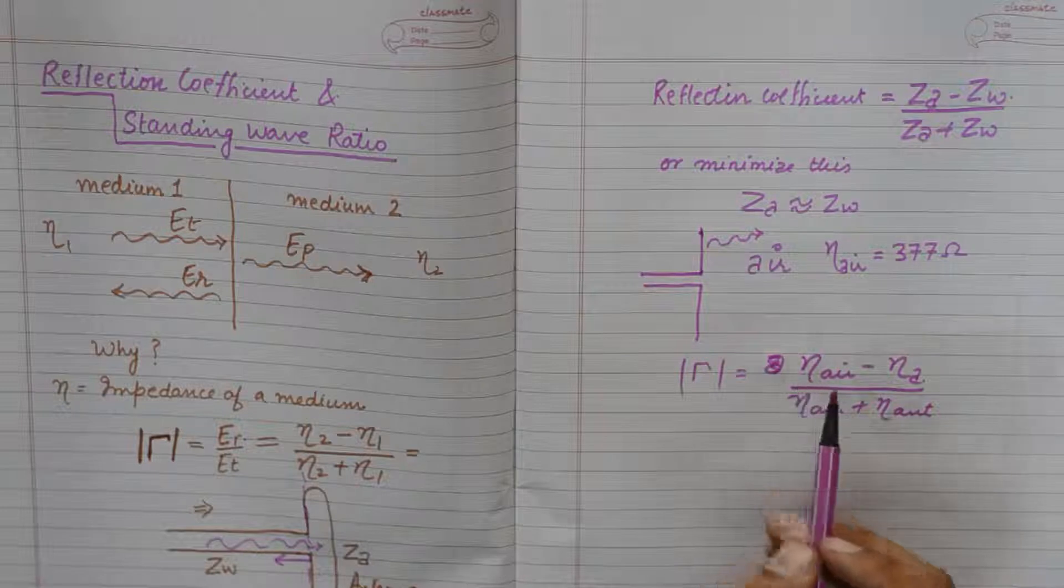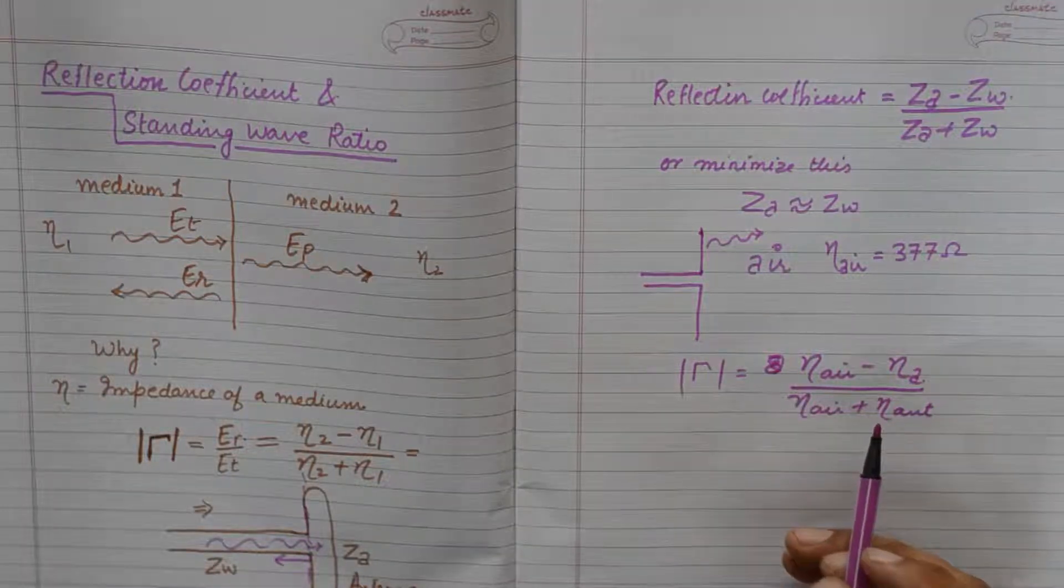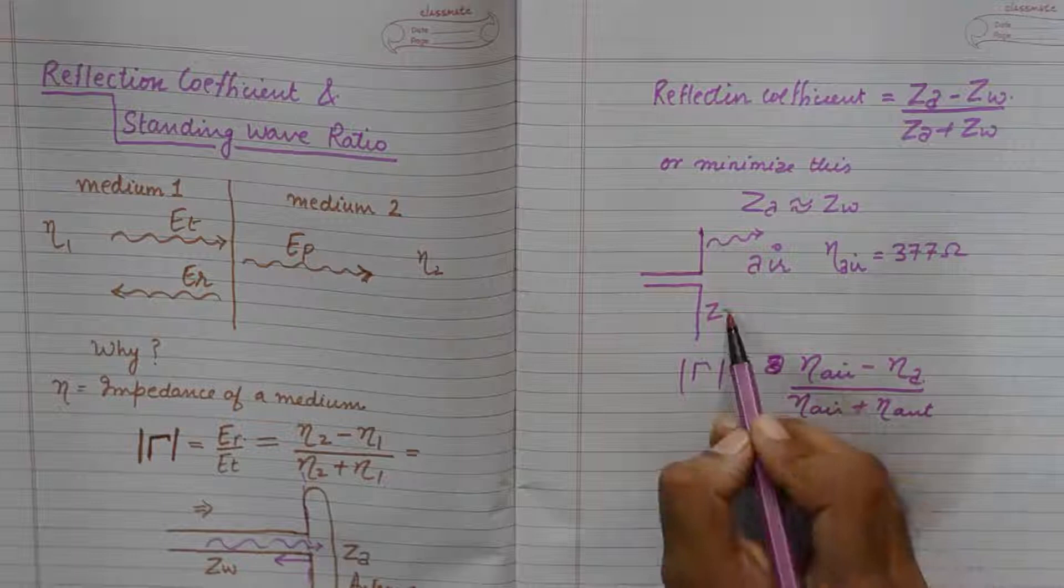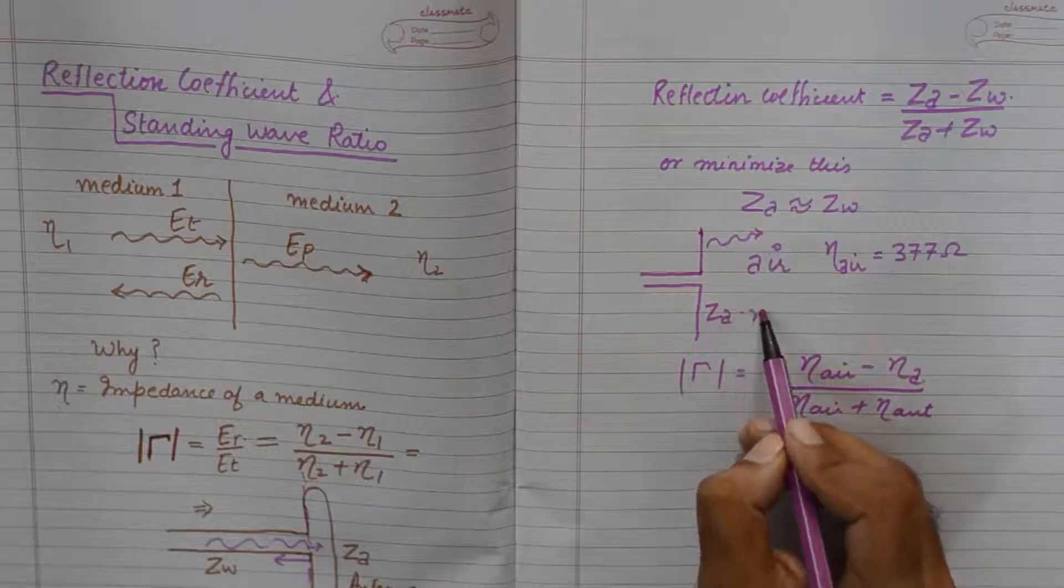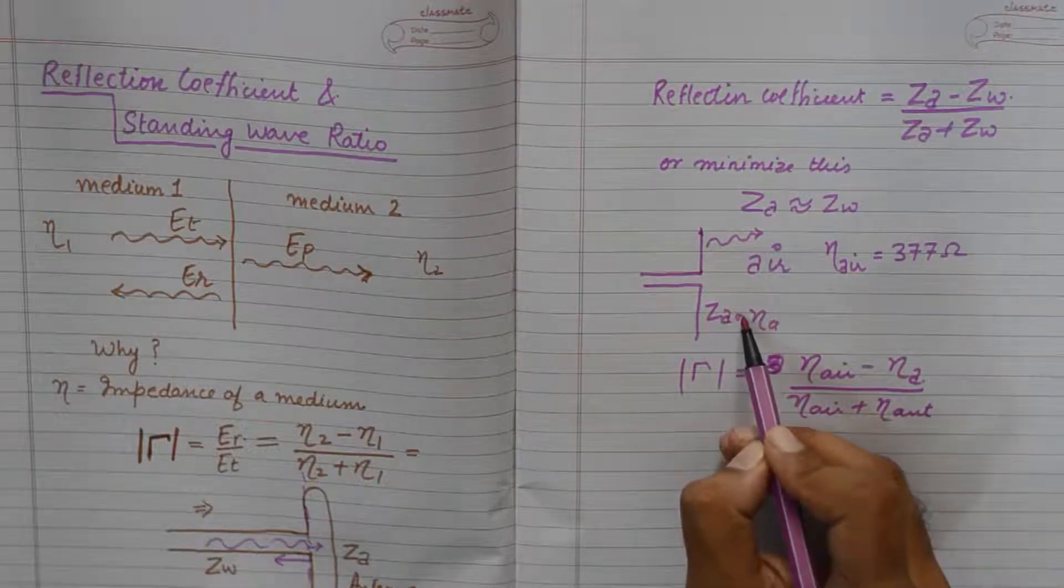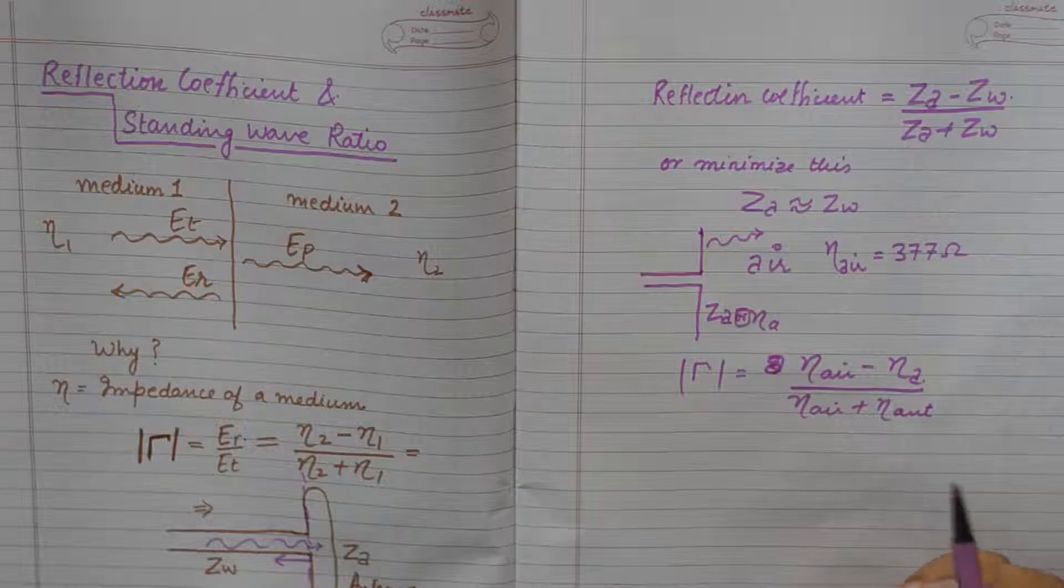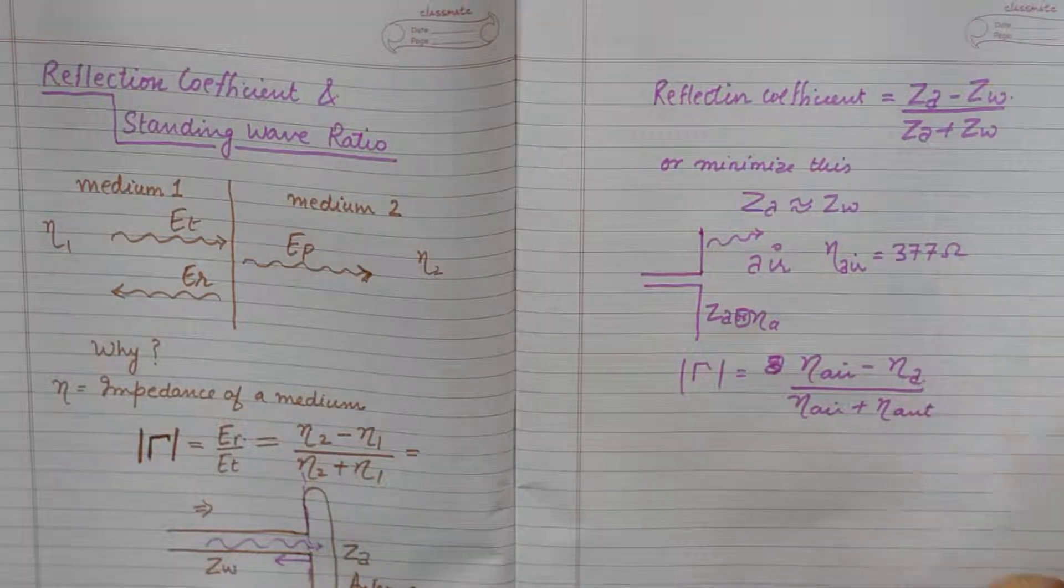We need to keep the output impedance of the antenna, ZA or ETA A so to say, to be equivalent to or close to 377.